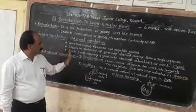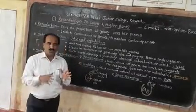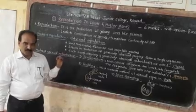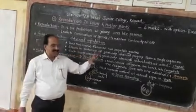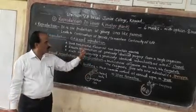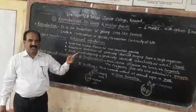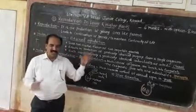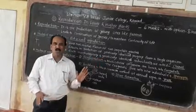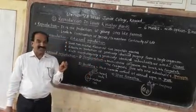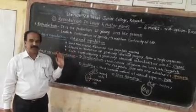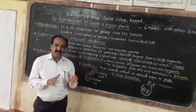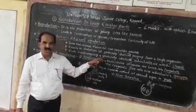Asexual reproduction is the reproduction that does not involve fusion of two compatible gametes or sex cells. It results in the production of genetically identical progeny from a single organism — there is no change. Such morphologically and genetically identical organisms produced from the parent are called clones.